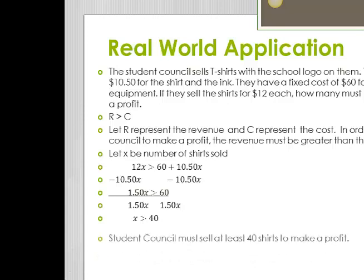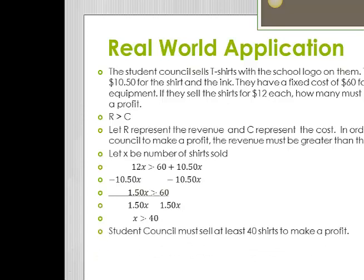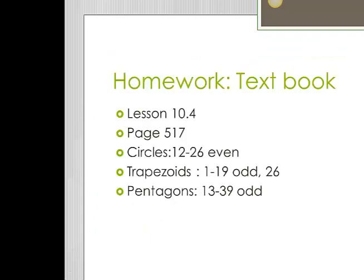So what does that mean? That means the student council must sell at least 40 shirts to make a profit. So that's it for our lesson. Our homework today comes from the textbook: page 517, circles 12 through 26 even, trapezoids 1 through 19 odd as well as number 26, and pentagons 13 through 39 odd. Remember to refer back to this video and your notes if you have any questions. Good luck.